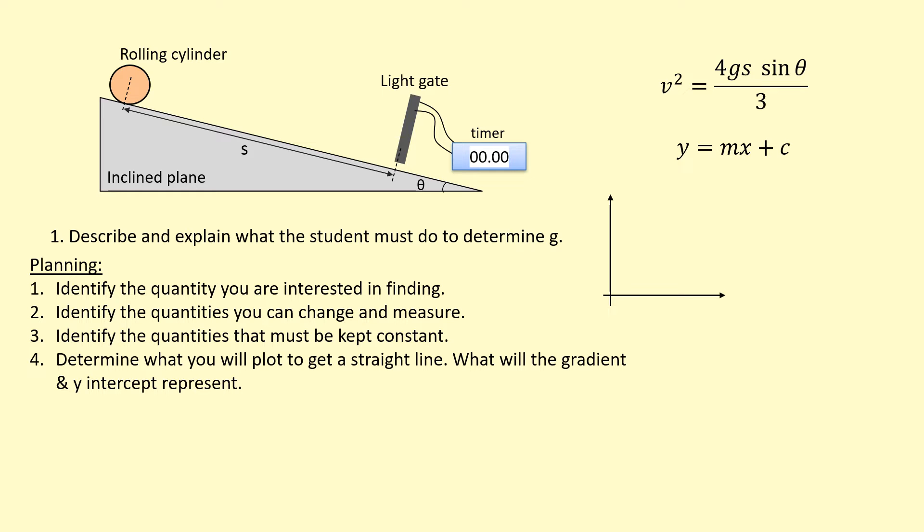I'm going to draw the axis here. I could plot v squared, the final velocity which I can get from the light gate on the y-axis. On the x-axis, because I'm changing the angle theta, I'm actually going to plot sine theta.